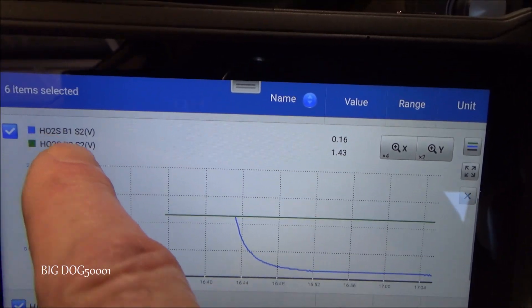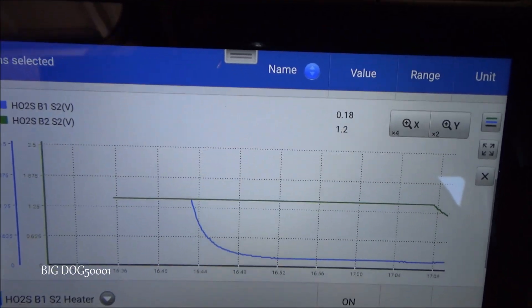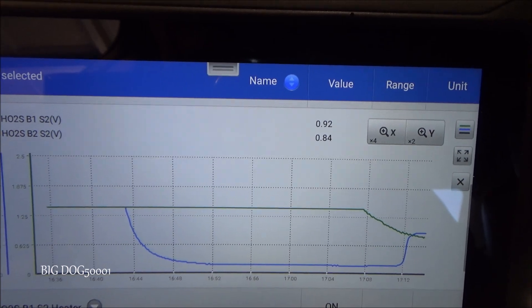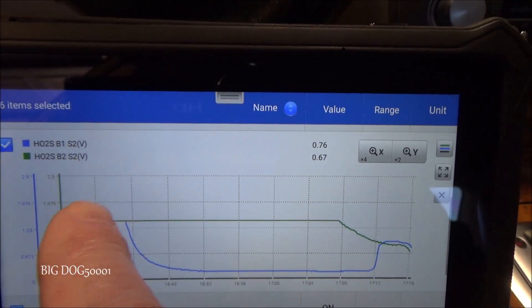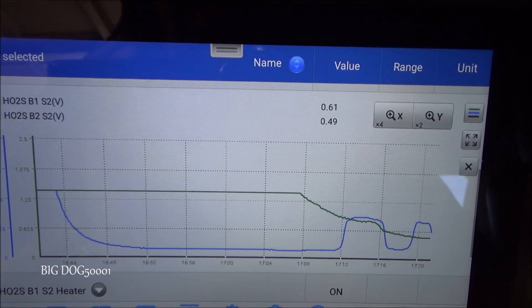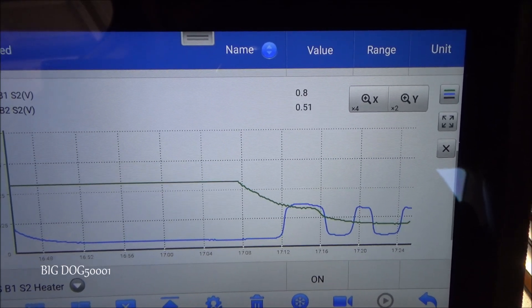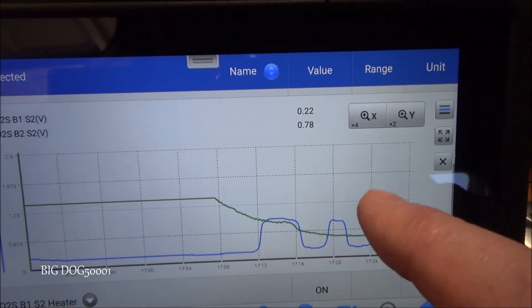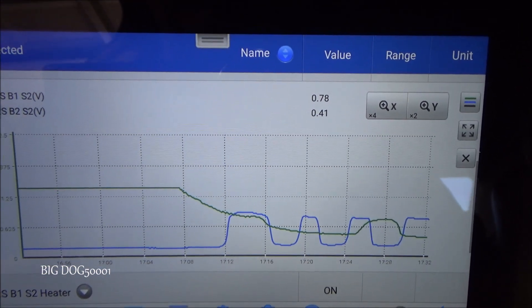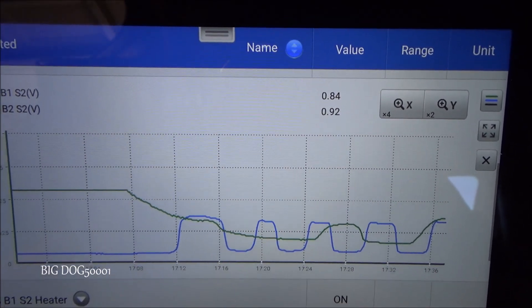But our one that's setting a code, Bank 2 sensor 2, the green trace, is not doing as much. Now it is working a little bit. But nowhere near as fast as the blue one. So you can see that our blue trace starting to go rich and lean. Green trace kind of lazy. Not doing so much. Working a little bit.